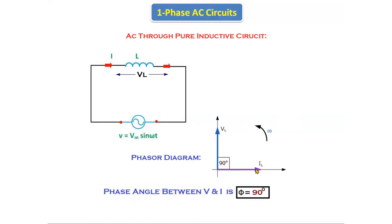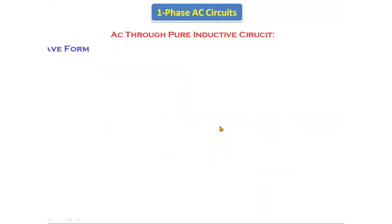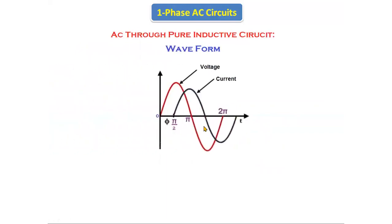The phase angle between voltage and current is phi equal to 90 degrees — there is a difference of 90 degrees between voltage and current. If you see the waveform of the pure inductive circuit, there is a phase difference of 90 degrees between the voltage waveform and the current waveform. Initially the voltage waveform is starting from zero and the positive half cycle is ending at pi degrees.